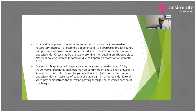Maternal polyhydramnios is common due to impaired absorption of amniotic fluid. The diagnosis may be made prenatally on USG by 16–20 gestational weeks. Postnatal diagnosis is confirmed on chest X-ray showing air-filled bowel loops on the left side, shift of mediastinum, and absence of the cupola of the diaphragm on the affected side.